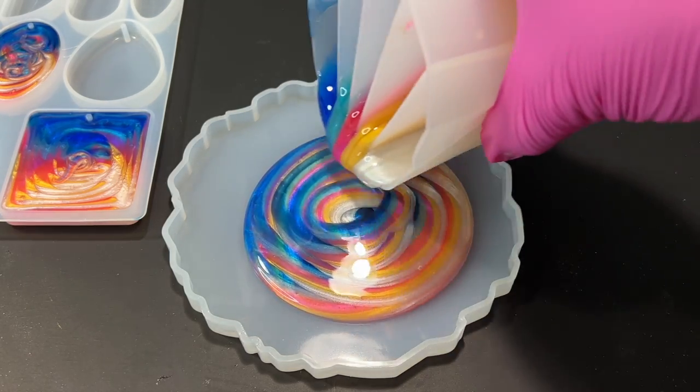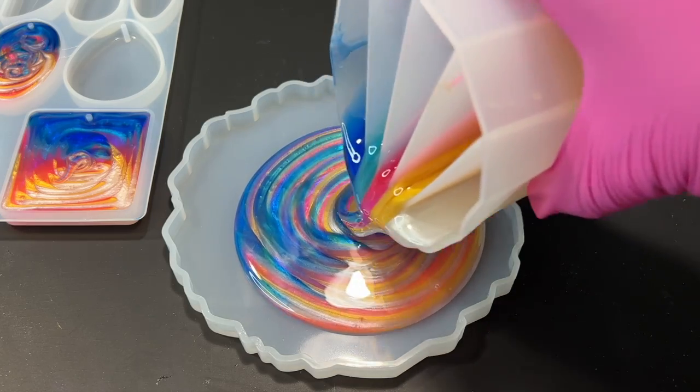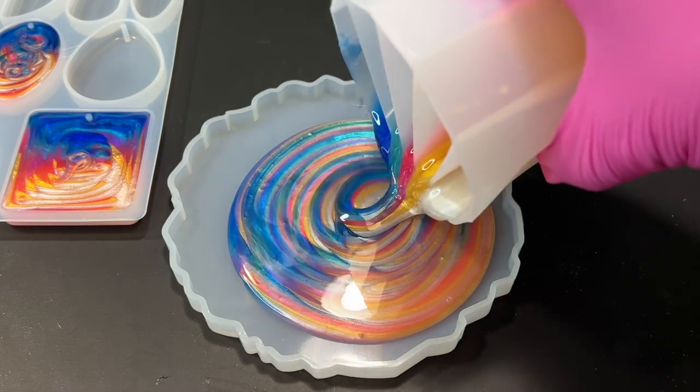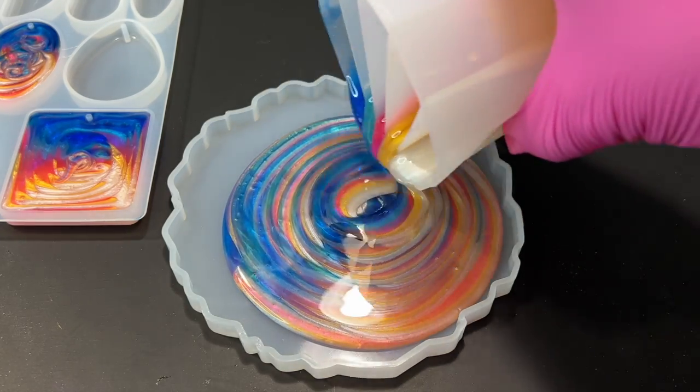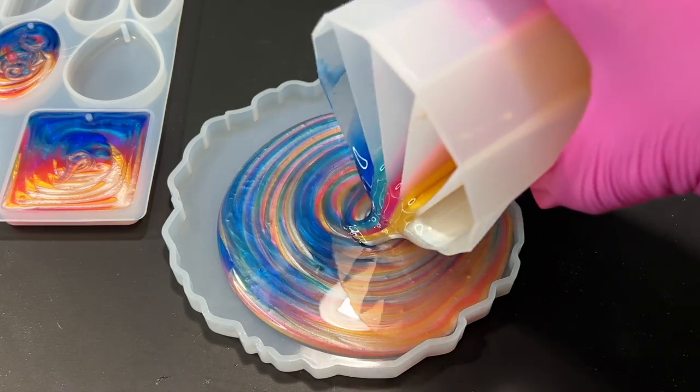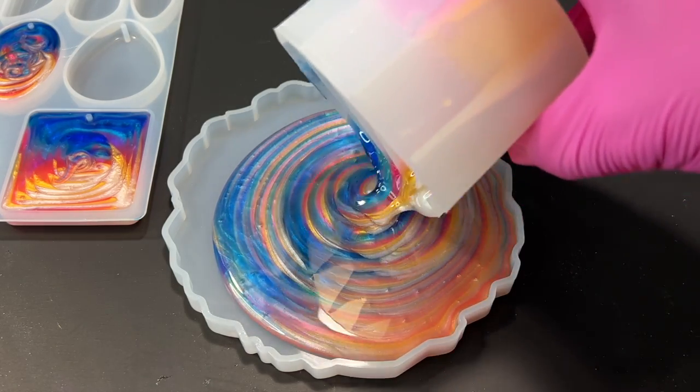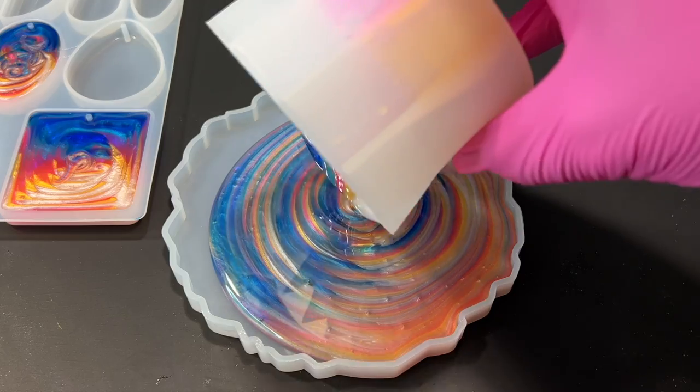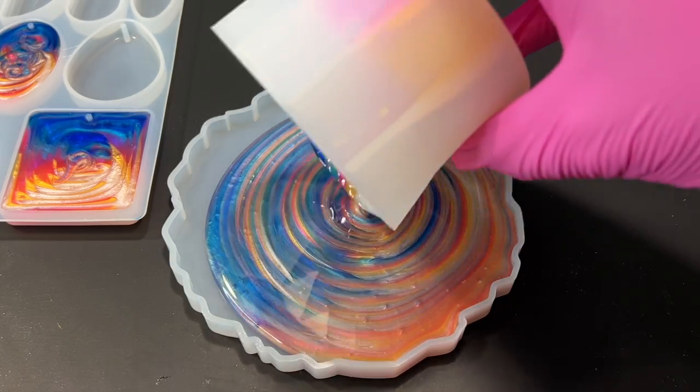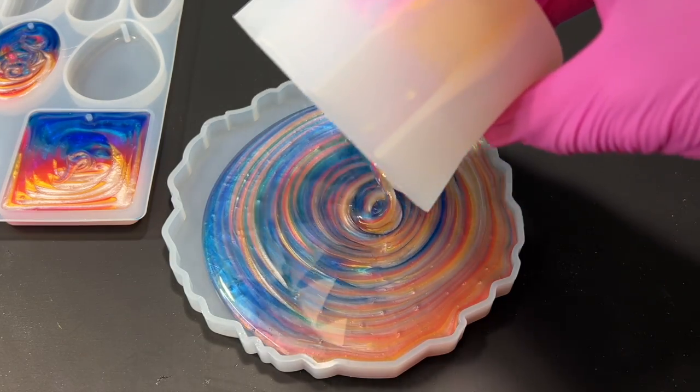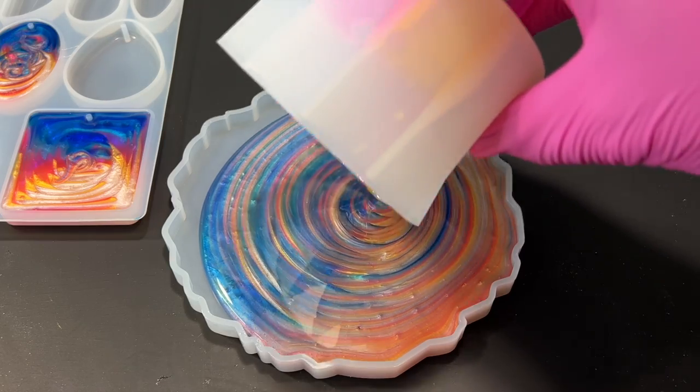In the end I only ended up filling up three of the pendant cavities because I wanted to make sure I had enough resin for the coaster mold. By the time I got to the coaster mold, I had figured out how to move my hand a bit, and just look at how pretty the resin is going. I really really hope the resin stays this way and it looks like this on the other side. I just love how you can see all the different colors.